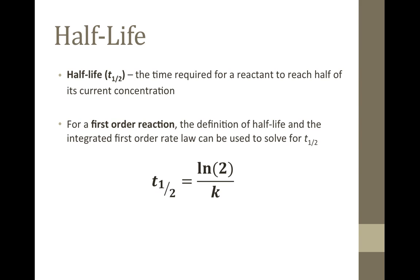Another useful concept in kinetics is the idea of half-life. The time needed to reach half of the initial concentration of a reactant is called its half-life. For a first order reaction, using the definition of half-life and the integrated first order rate law, you can solve for time and determine that the half-life is equal to the natural log of 2 divided by the rate constant. Notice that in a first order reaction, the half-life is constant and does not depend on concentration. This has useful applications when studying radioactive nuclear decay, which is another type of first order reaction.